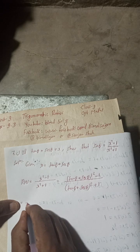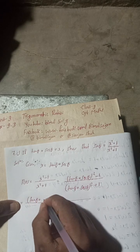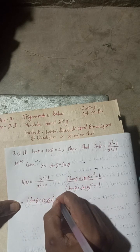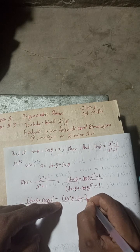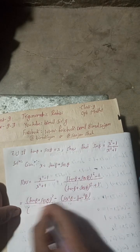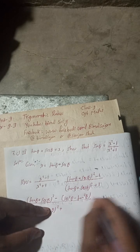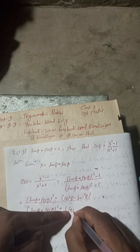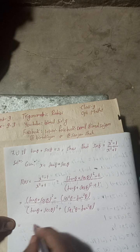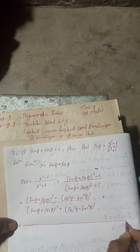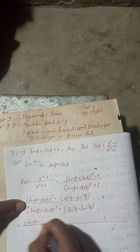Now this is (tan θ + sec θ)² - 1. Now this 1 can be written as sec²θ - tan²θ, because sec²θ - tan²θ = 1. In the same way, the denominator is (tan θ + sec θ)² + 1, and again for this 1 we write sec²θ - tan²θ.